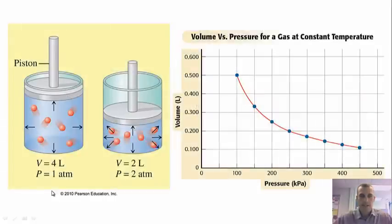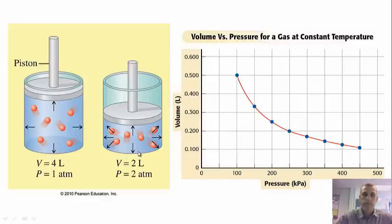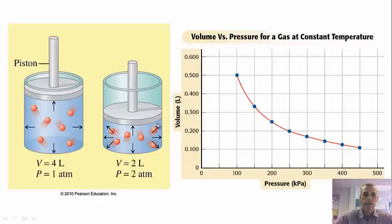Looking at the piston images, we have a volume of four liters and a pressure of one ATM. As we decrease the volume, we're increasing the pressure. The reason the pressure is increasing is there are more collisions of the particles against the walls, which increases that pressure. We haven't introduced more particles — we've just decreased the volume, which means we're increasing the pressure.